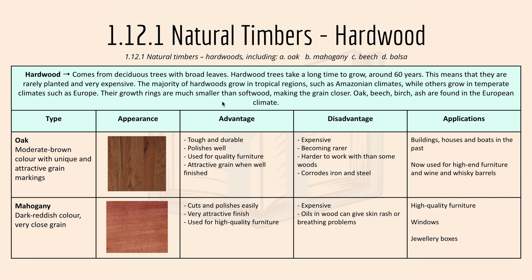Oak, beech, birch, and ash are found in the European climate. Oak has a moderate brown color with unique and attractive grain markings. The advantage is that it's tough and durable, it polishes well, and it's used for quality furniture with an attractive grain when well finished. The disadvantage is it's becoming expensive and rarer, it's harder to work with than some woods, and it corrodes iron and steel. Applications include buildings, houses, and boats in the past, but it's now used for high-end furniture.